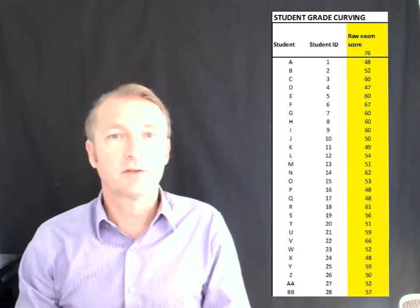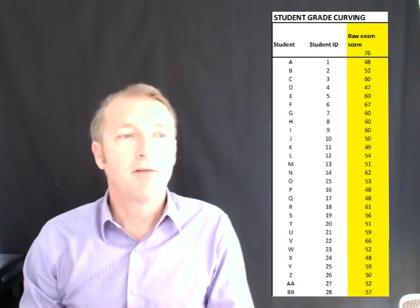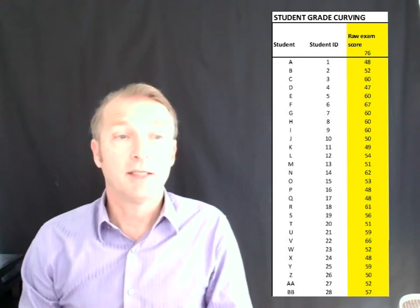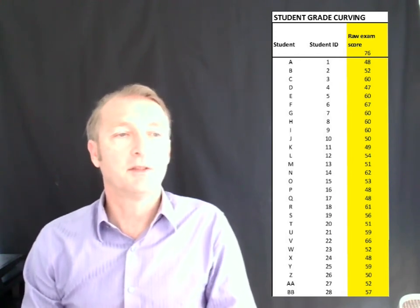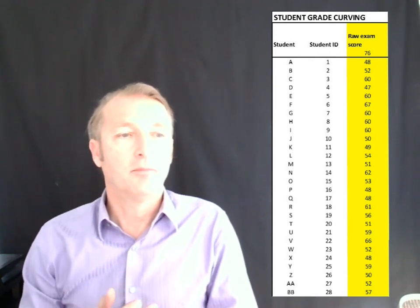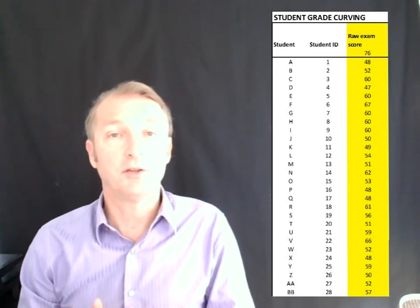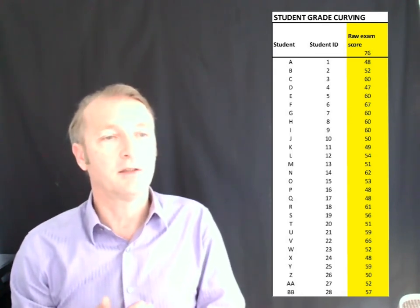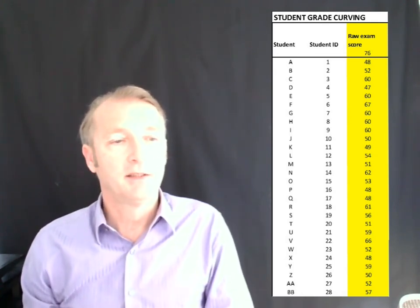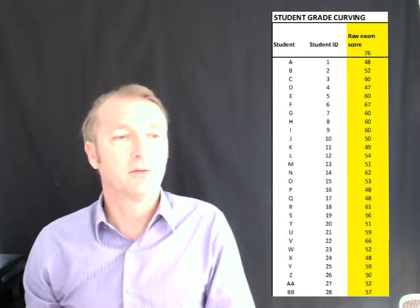Here on this screen, you can see on the side I have a set of students taking an exam, and you can see the scores in the yellow column. The maximum points you can get for this exam, noted at the top, are 7 and 6, and then you can see scores underneath that from each single student.